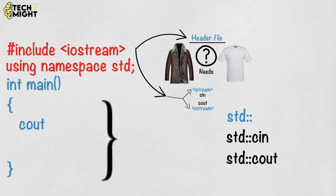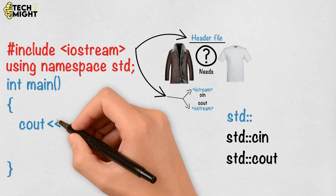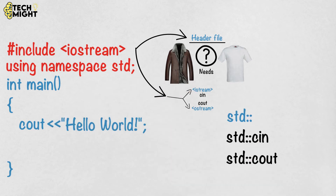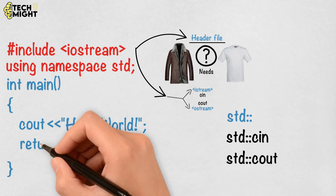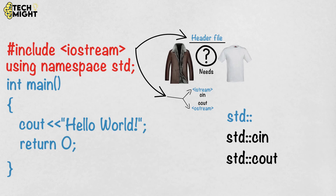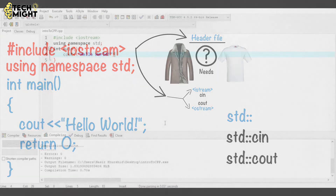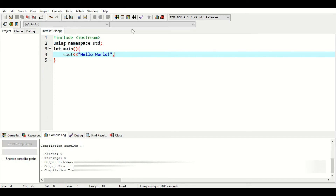cout stands for console output. Everything written in inverted commas is displayed on screen. return 0 is a keyword which was compulsory for the main function in older C++, but in modern C++ it is not compulsory. Let's run this code.